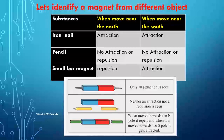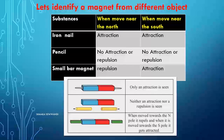For the pencil: when moved near the north pole, no attraction or repulsion is seen. When moved near the south pole, no attraction or repulsion is seen either. Since neither attraction nor repulsion takes place, it should be a pencil among these substances.